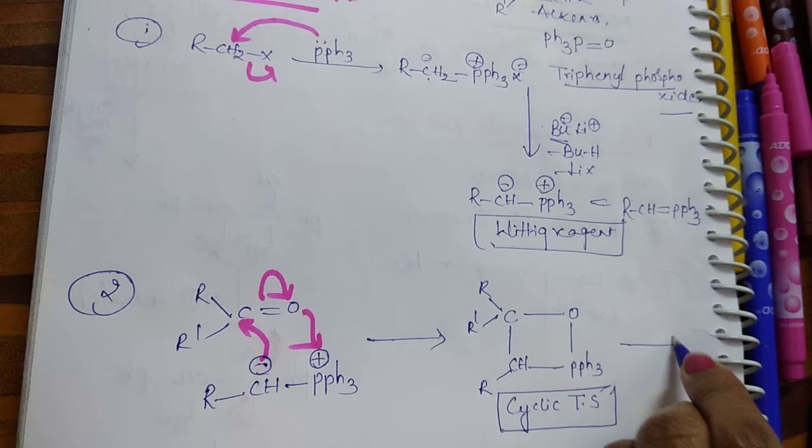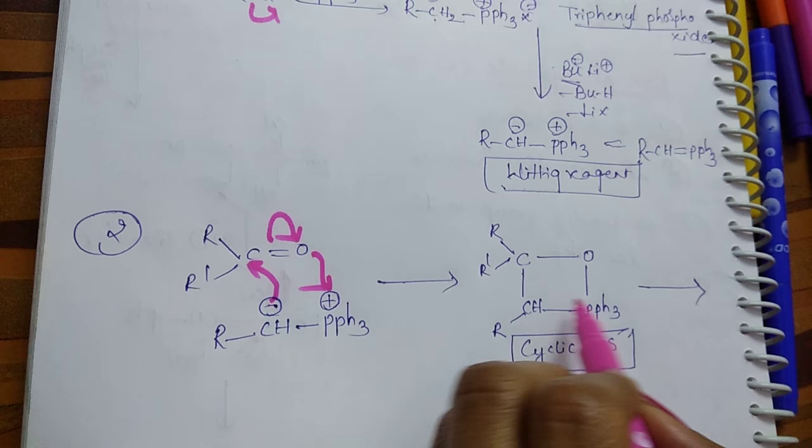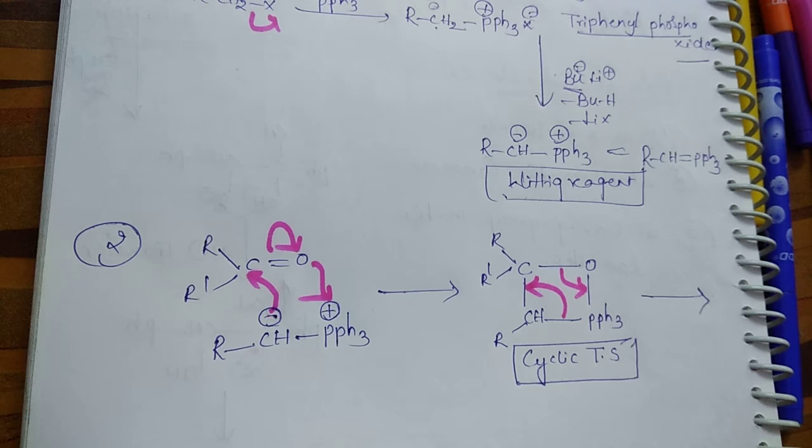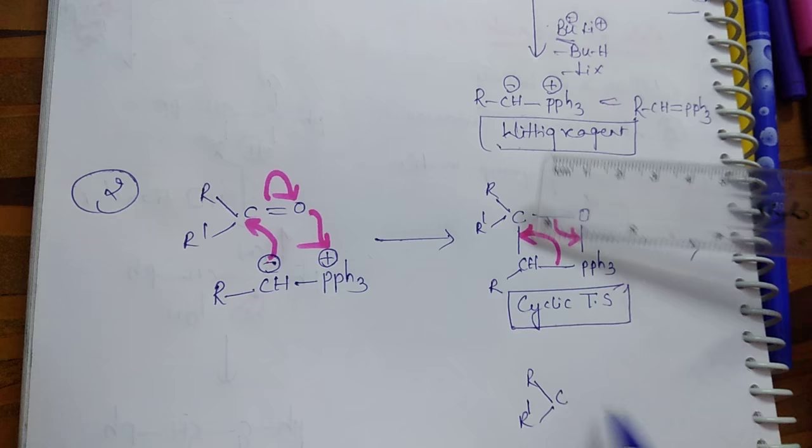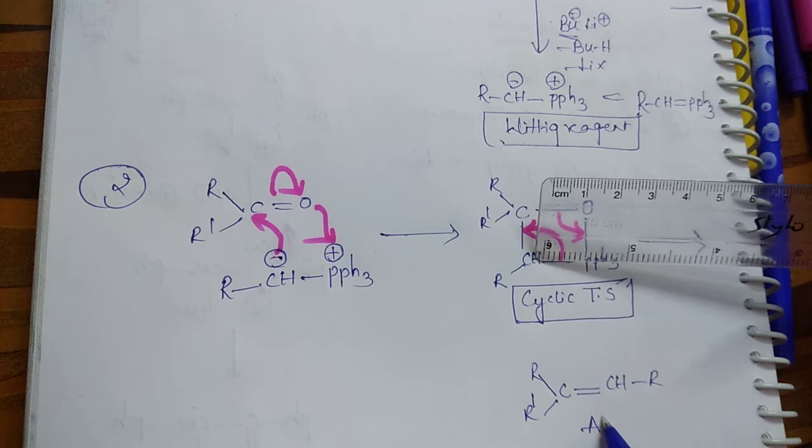Further, it gives alkyl group and triphenyl phospho oxide. What we get? R-C-R' double bond CHR". This is called alkene, and...